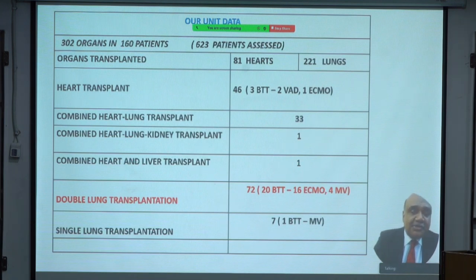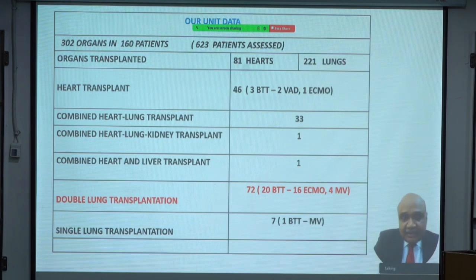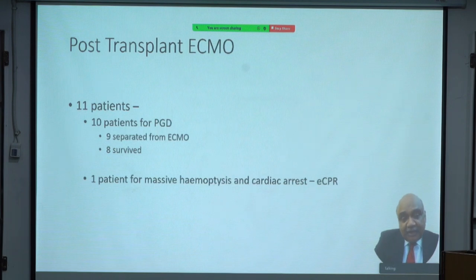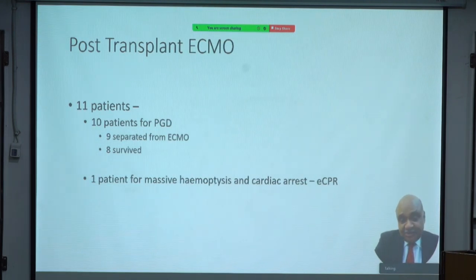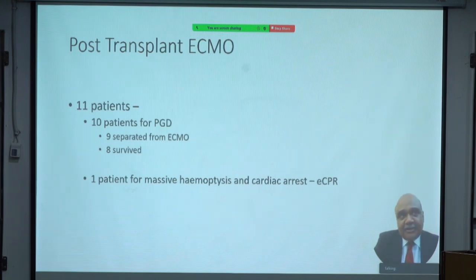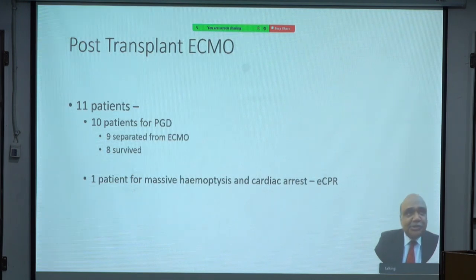Coming to our unit data: we transplanted organs in various configurations — combined heart and lung, heart-lung-kidney, heart and liver, double lung, and single lung transplant. As regards post-transplant ECMO, we had 11 patients: 10 were for PGD and one was for massive haemoptysis and cardiac arrest. Of those who had PGD — required within the first 72 hours — we were able to separate nine from ECMO, of whom eight survived. The patient with massive haemoptysis and cardiac arrest was a COVID ARDS patient who had a long period of ECMO, was bridged to recovery but developed chronic respiratory failure, was then listed for transplantation managed with non-invasive ventilation, and after transplant was successfully separated from ECMO.